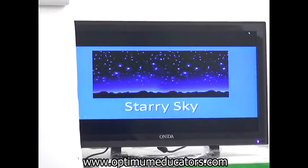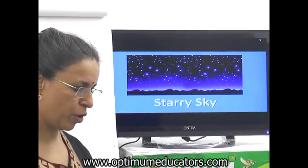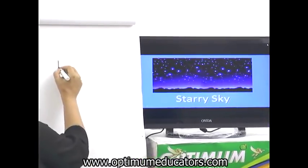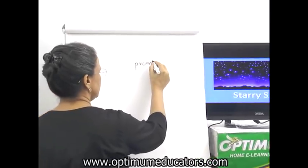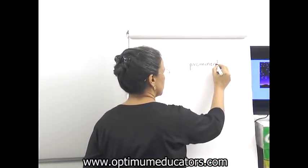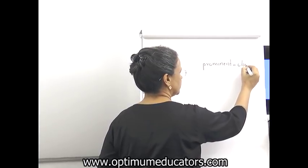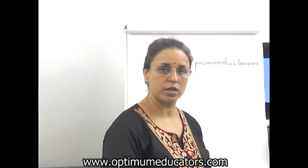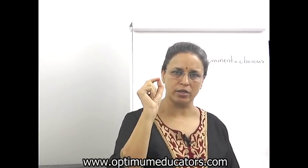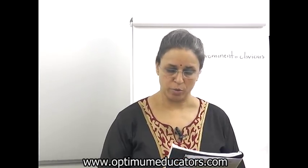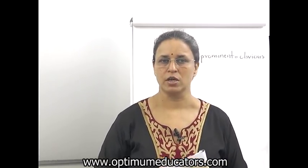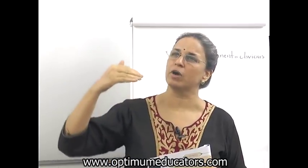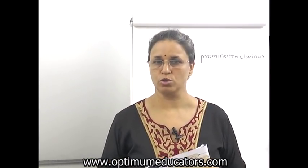Some stars are prominent. Prominent means obvious, which means we can see it very clearly. Some stars may look very tiny and you may not see them properly, while some will be seen very clearly. Some are prominent while some are tiny and faint. Tiny means very small and faint means a little unclear, because they are either far away or sometimes because of clouds you cannot see them properly.